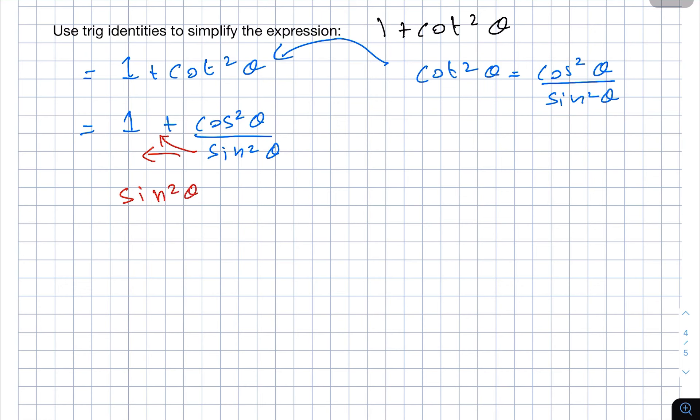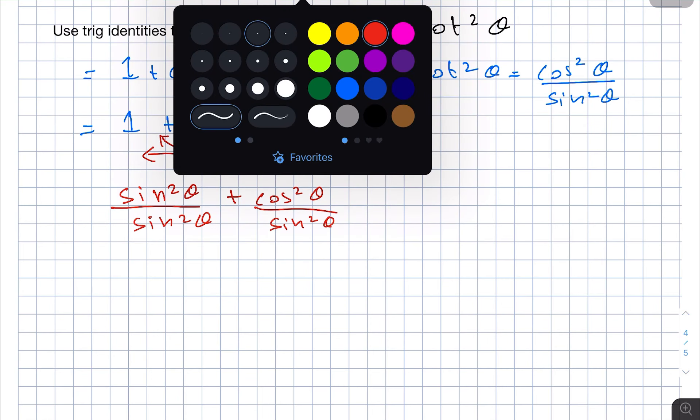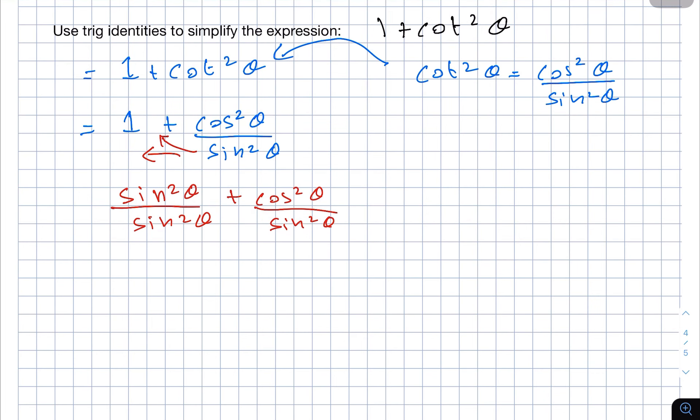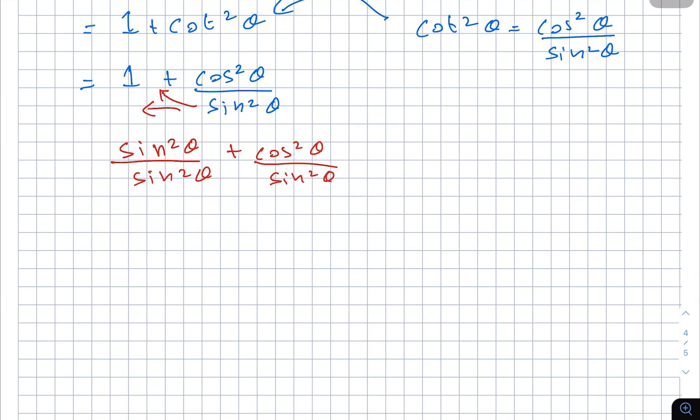sin²θ over sin²θ plus cos²θ over sin²θ. Now we can use regular algebra and math to solve this out. So we will get sin²θ plus cos²θ